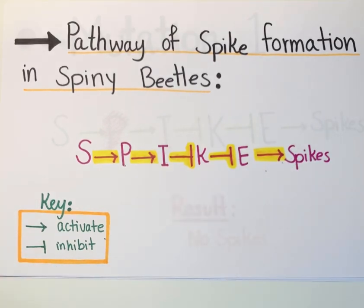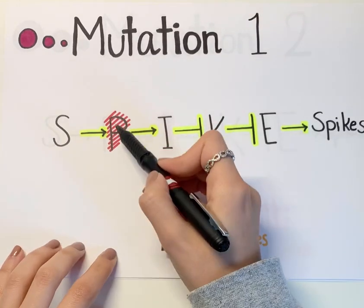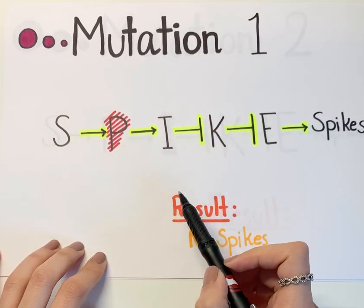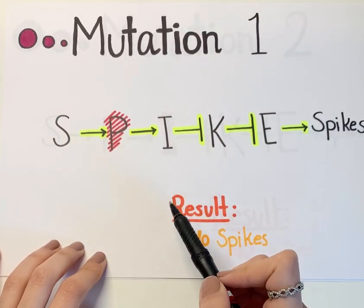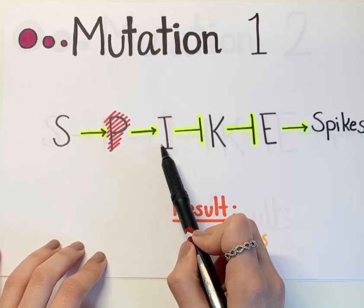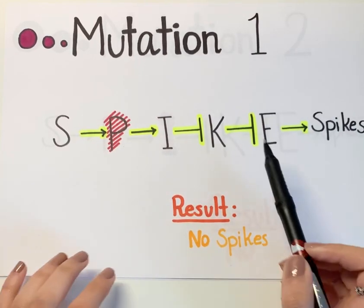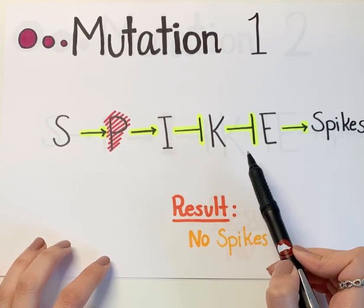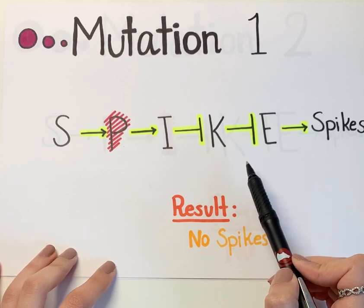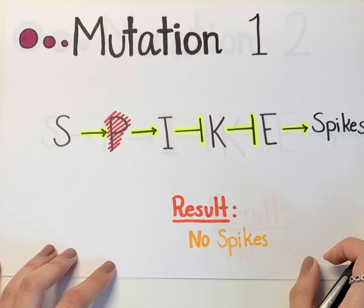To see how different mutant strains affect the texture of the ectoderm, we will be looking at some examples. In this first scenario, P gene is mutated. As a result of P gene not being able to function properly, gene I cannot be activated, which then results in the K gene not being blocked. When K gene is present, it blocks the E gene, so E gene cannot activate spikes, resulting in appearance of smooth cells instead of spiky ones.